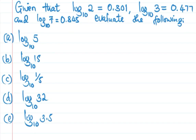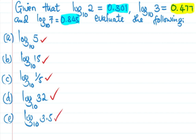Let's see the solution of these problems about logarithm. Given that log 2 base 10 is 0.301, log 3 base 10 is 0.477, and log 7 base 10 is 0.845. We are asked to evaluate: log 5, log 15, log(1/5), log 32, and log 3.5, all base 10.